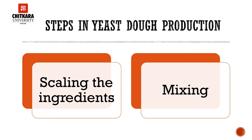The second step is mixing. Mixing yeast doughs has three main purposes. The first is to combine all ingredients into a uniform smooth dough. The second main purpose is to distribute the yeast evenly throughout the dough. And the third purpose is to develop the gluten.